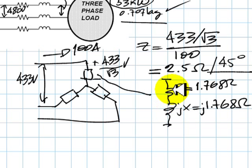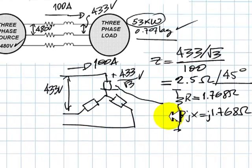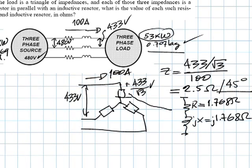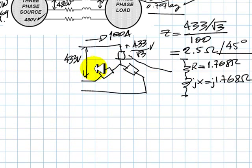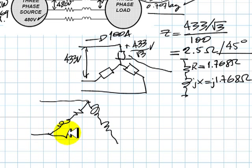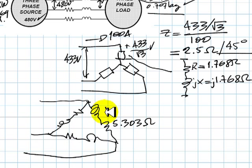But what we want is to represent each one of them in a delta. So this represented as a delta would be three impedances. Well, those impedances have the values of these ones multiplied times 3. That is 5.303 ohms and j5.303 ohms. And the same is true for each one of the other phases of that delta.